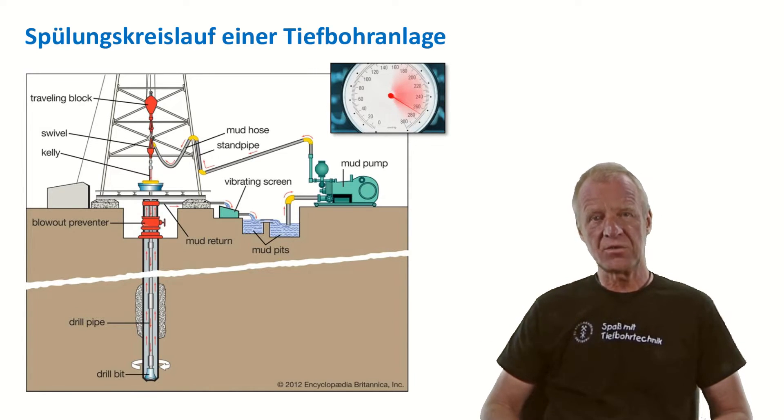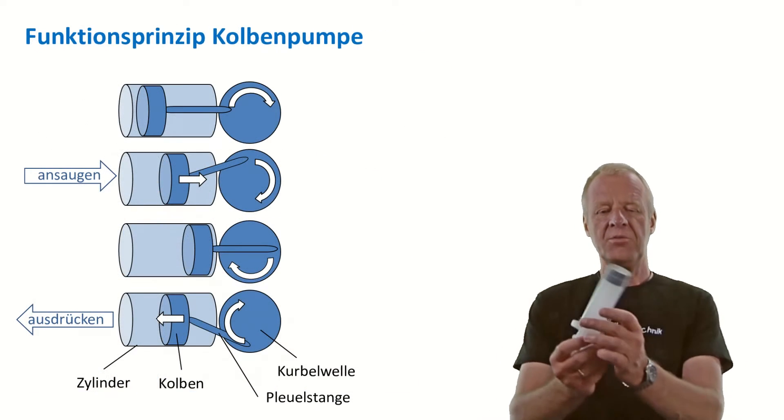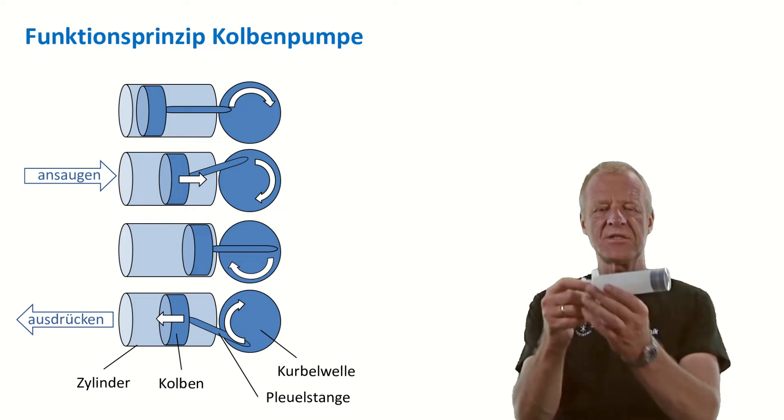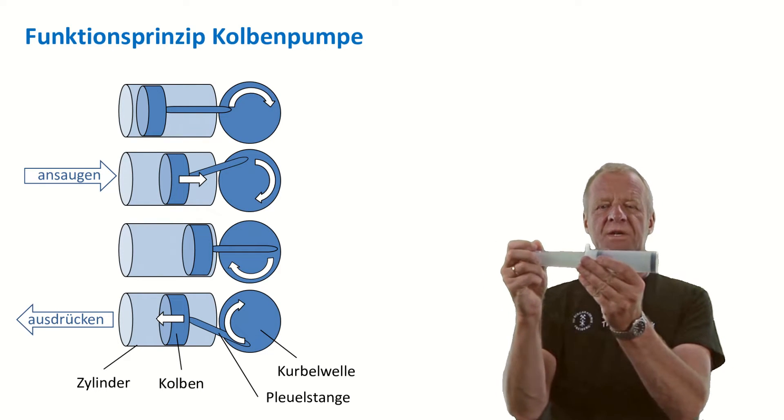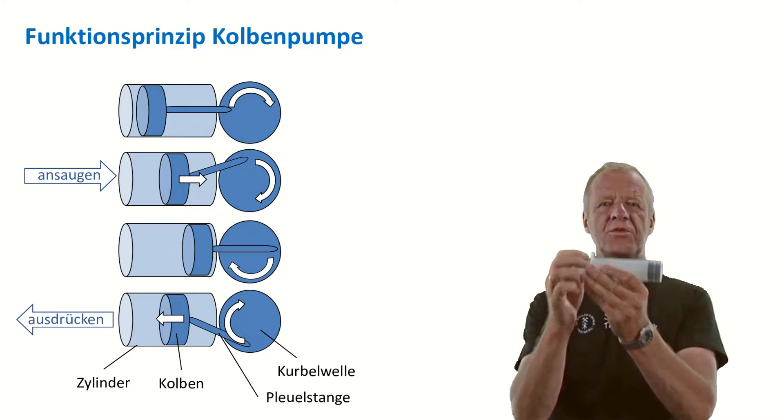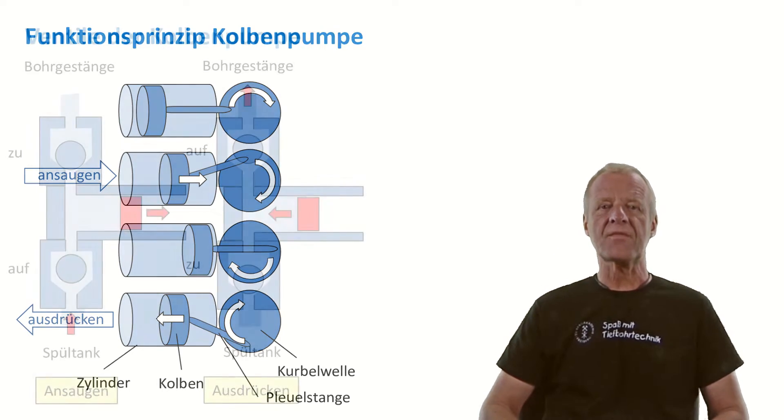The only pumps that can generate such high pressures are piston pumps. A piston pump works like this syringe. When the piston moves back, it sucks in mud and when the piston moves forward again it pushes mud with high pressure into the drill string and the borehole.